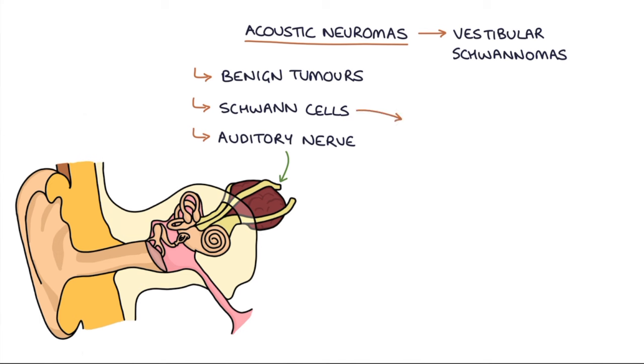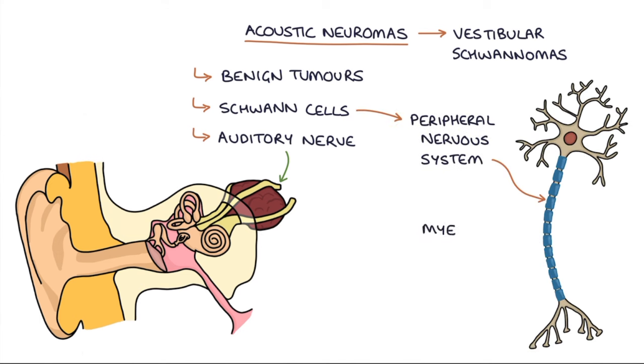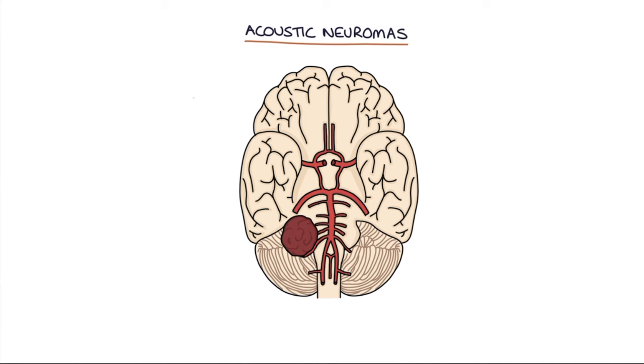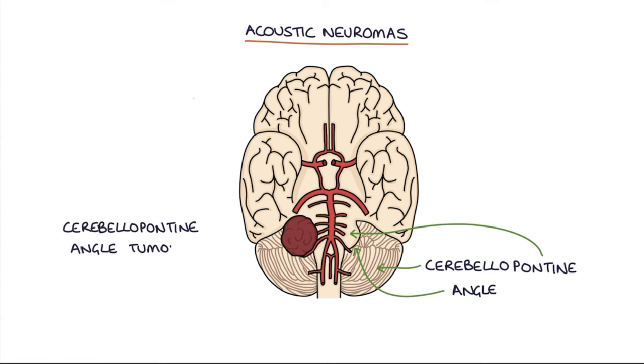Schwann cells are found in the peripheral nervous system and they provide the myelin sheath that surrounds neurons. Acoustic neuromas occur at the cerebellopontine angle and are sometimes referred to as cerebellopontine angle tumours.